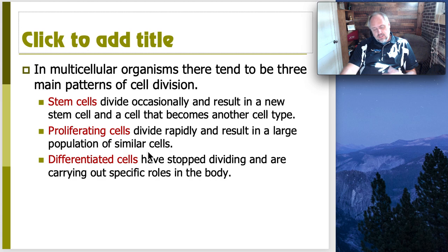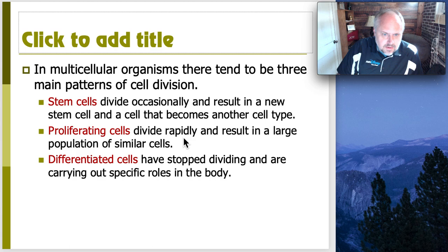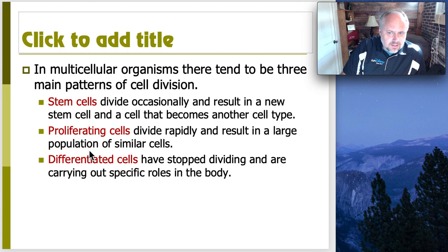Proliferating cells, these are ones that certainly are found in us as we grow. And these are the ones that are trying to increase the size of the organism. And this is a way in which we can essentially create a large population of similar cells. So we'll see this very early in development, but this is not a process that you and I currently have going on much right now.